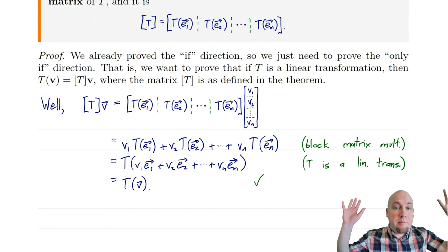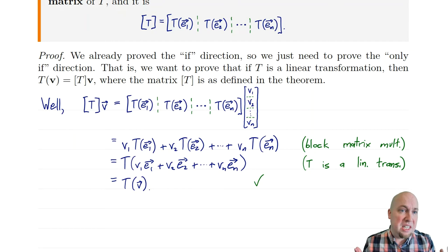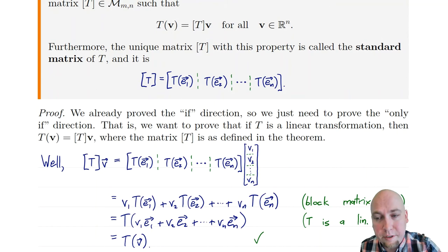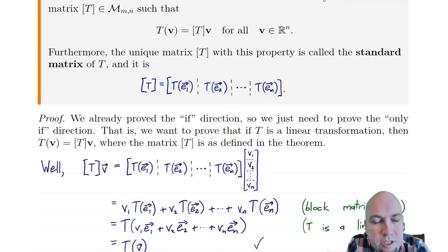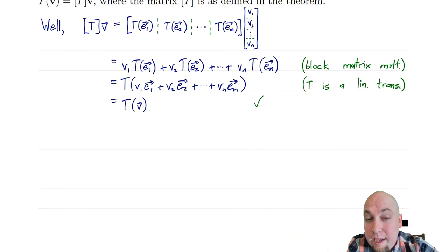And then I'm done. That's what I wanted to show. I've got matrix times vector equals linear transformation applied to vector. So I've shown that if T is a linear transformation, then this equality is true. I've proved the only-if direction. There's actually one extra thing to prove: uniqueness. I have not yet shown that there's only one matrix — the standard matrix — that works here.